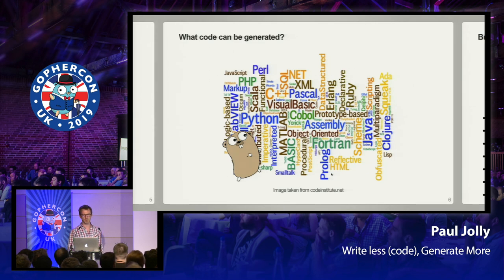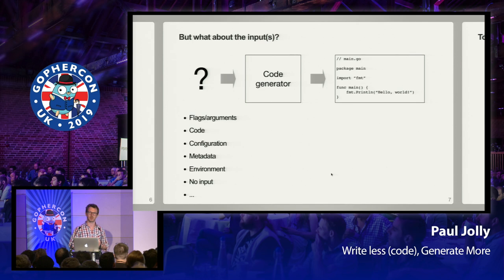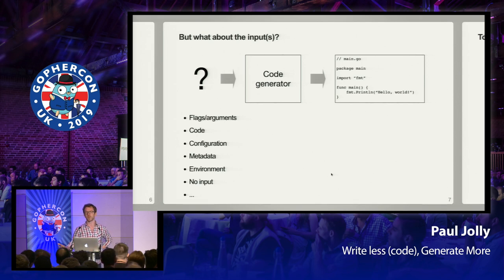What can be generated? Absolutely anything — programs can generate images, code, whatever you like. There can actually be zero inputs to a code generator. Has anybody used Hugo? A good number of people use Hugo. There's effectively zero input to a code generator that generates a template for you — you literally just run a program and it generates some code as a starting point. Maybe you provide configuration or a command line flag; all of these are different sorts of inputs to a code generator.